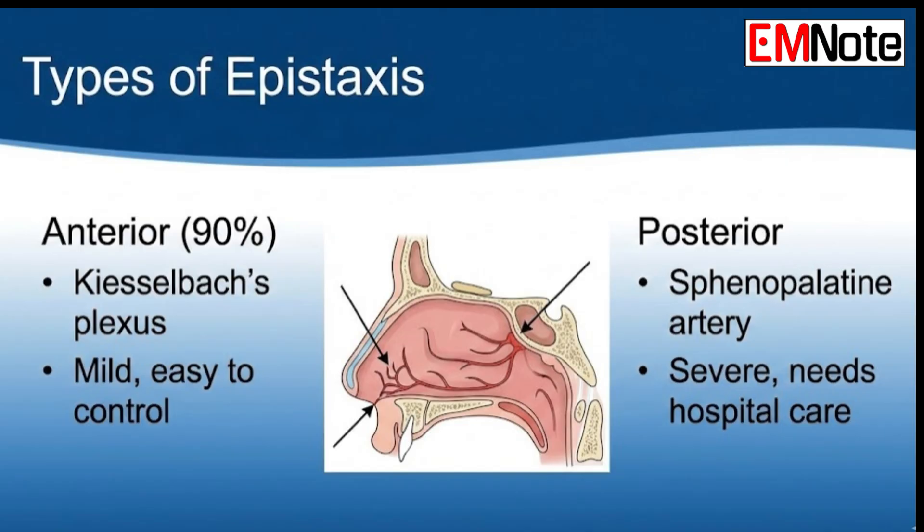Let's start with the 90% case — the common scenario — anterior bleeds. The specific spot responsible for almost all of these is the anterior part of the nasal septum, specifically an area called Kieselbach's plexus, sometimes called Little's area. It's a high-traffic junction where five different arteries all meet, and that's what makes it so vulnerable.